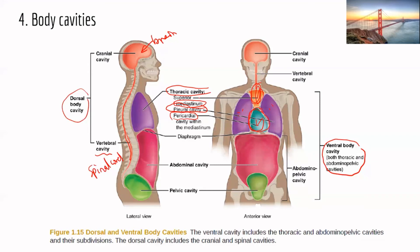The next large cavity on the ventral side is the abdominal cavity, which contains many organs. Inferior to the abdominal cavity is the pelvic cavity, where you typically find the reproductive organs. Those are the major body cavities.